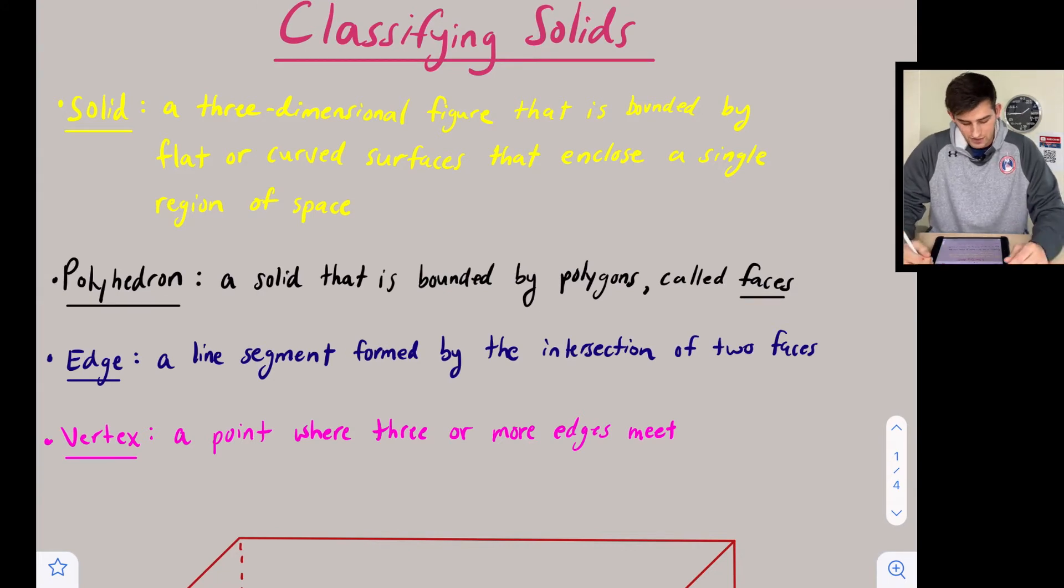So first of all, let's start off with what is the definition of a solid? It's a three-dimensional figure that is bounded by flat or curved surfaces that enclose a single region of space. That phrase 'three-dimensional' is what stands out.